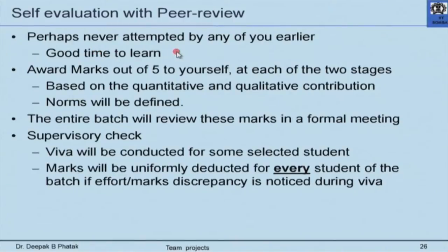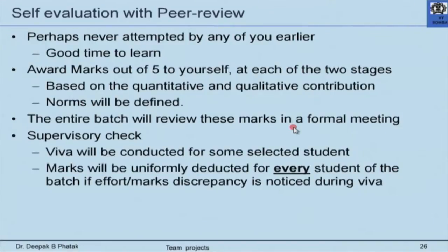We define norms such that every student should have written at least one program, attended meetings, worked seriously, and the total quantum of time spent as reflected in the diary should be adequate. The entire batch then reviews the marks in a formal meeting, and the group coordinator submits a list of student roll numbers and marks. Normally these marks become the final marks for individual effort, which are added to the common group marks to form the student's overall evaluation grade.